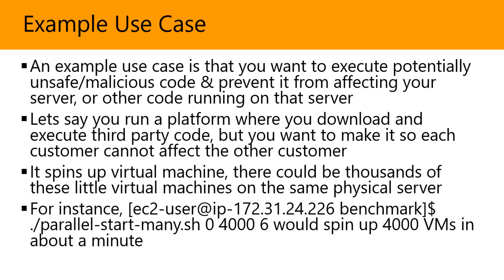Another example: let's say you run a platform where you download and execute third-party code, but you want to make sure each customer cannot affect another customer. You want to make sure different customer databases don't affect each other. Firecracker spins up virtual machines for this — there could be thousands of these little VMs on the same physical server. The command shown here would spin up 4,000 VMs in about a minute, as demonstrated at AWS re:Invent.